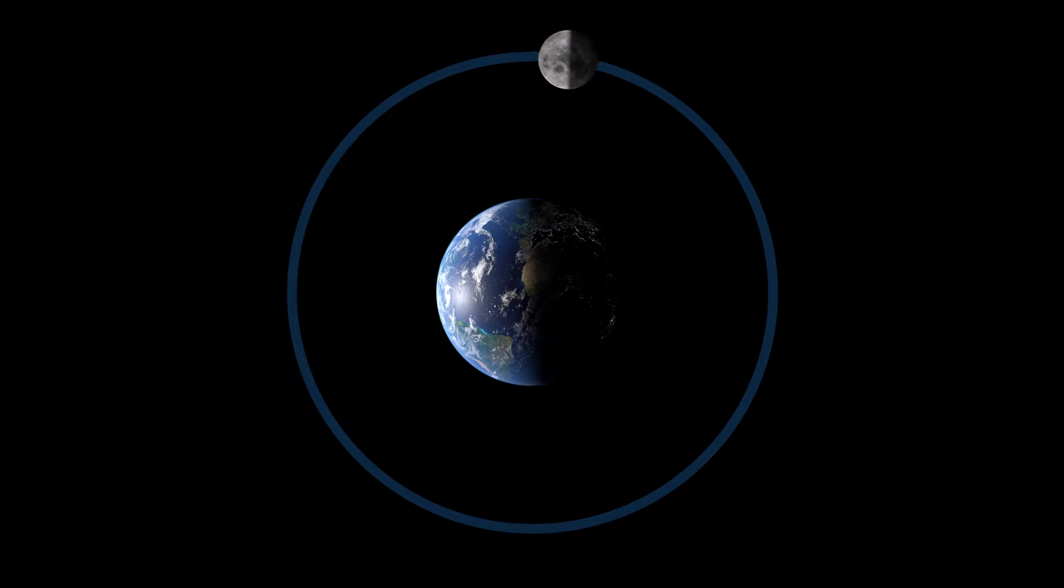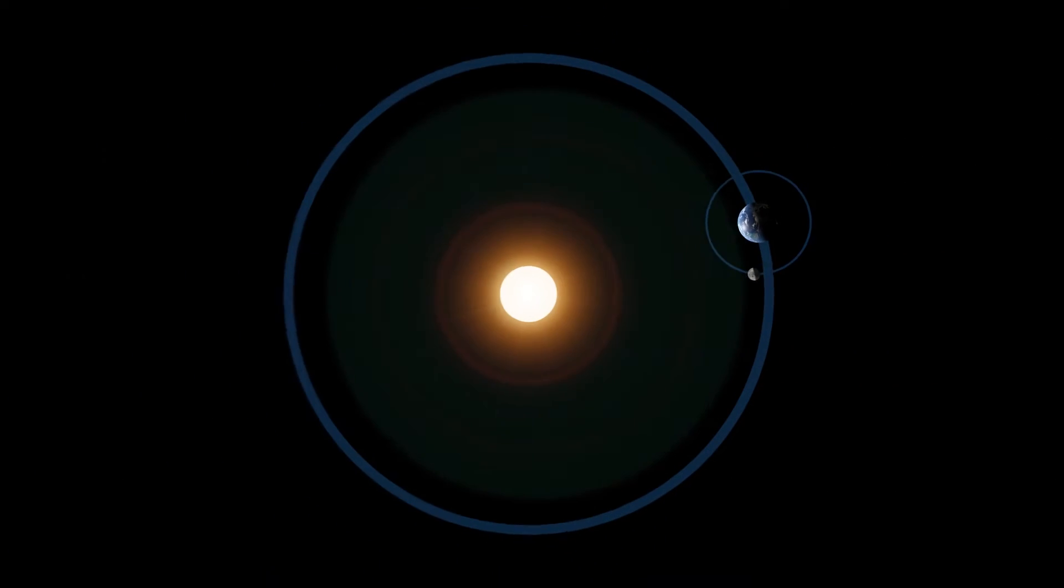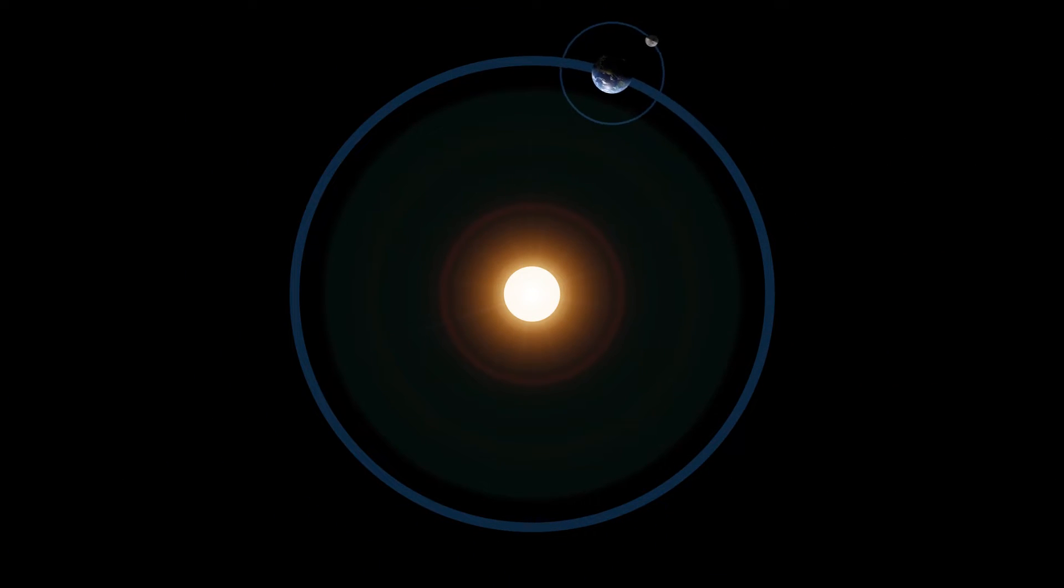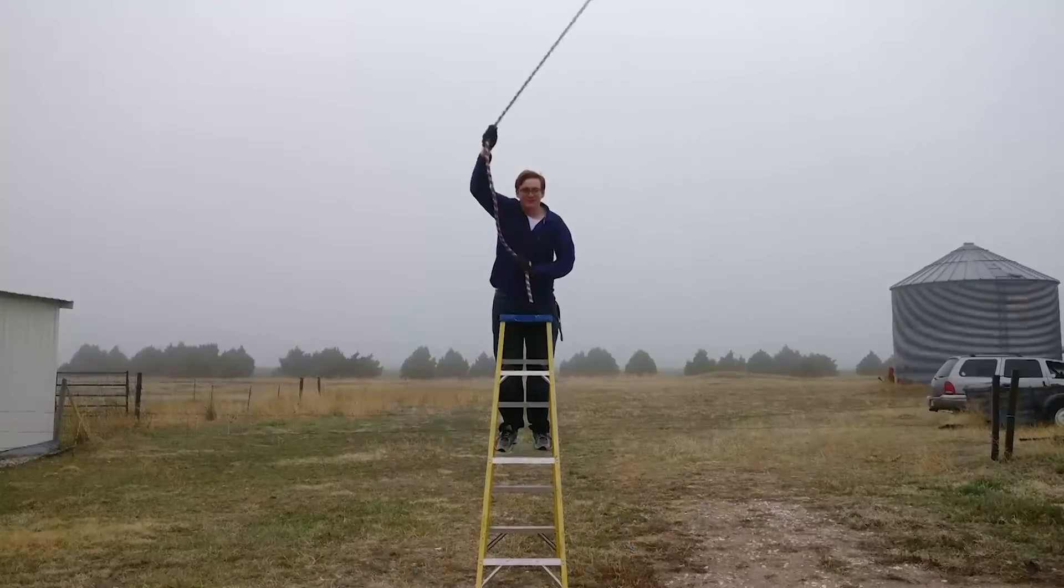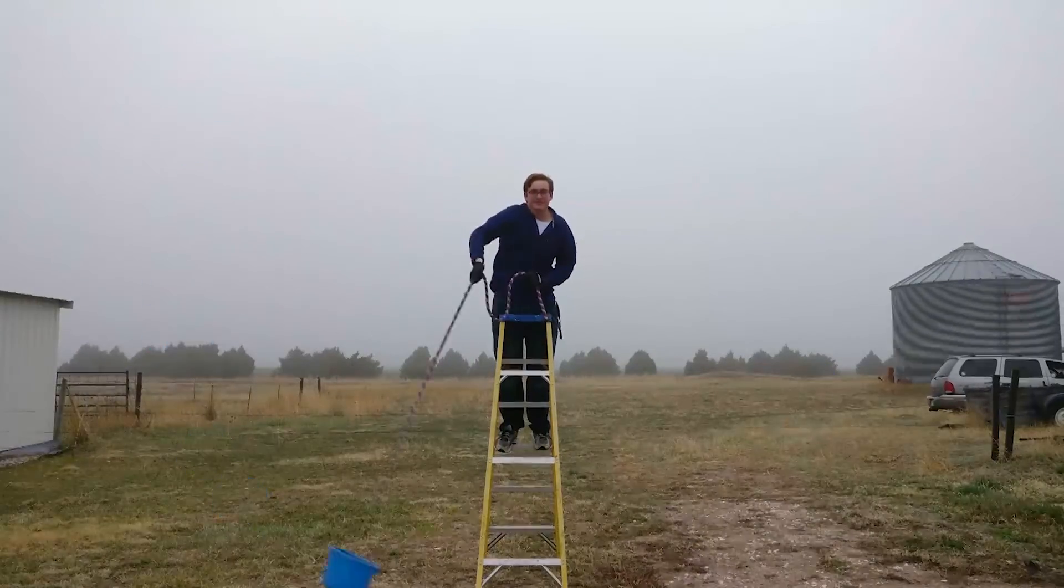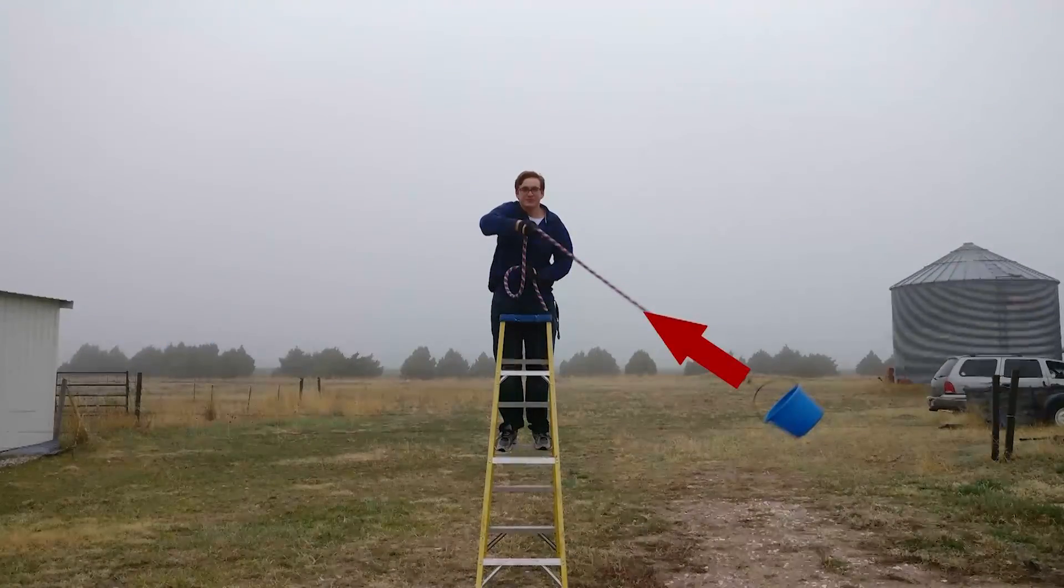The moon is essentially a giant cannonball circling the earth, and the earth is essentially a giant cannonball circling the sun. Now if you're still confused about why objects move in orbits, you can check out a demonstration I did a little over a year ago. Sorry in advance about the wind in that video, but I still think it's an effective explanation.